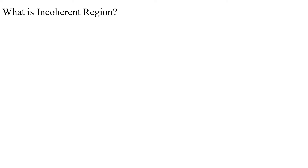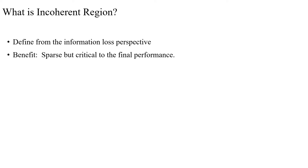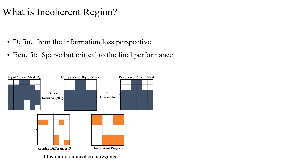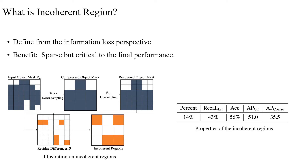We first propose the concept of incoherent regions. Incoherent regions are error-prone areas where mask information is lost due to reduced spatial resolution, computed by down-sampling compression and up-sampling recovering. A large portion of prediction errors are concentrated in these incoherent regions — they occupy 43% of all wrongly predicted pixels while only taking 14% of the corresponding bounding box areas.